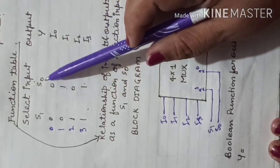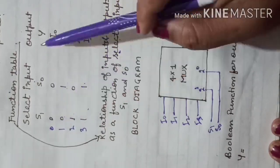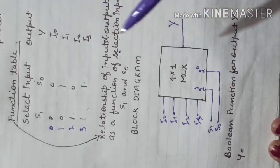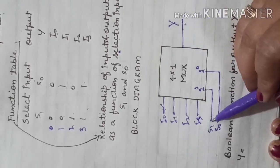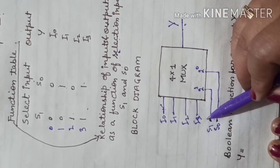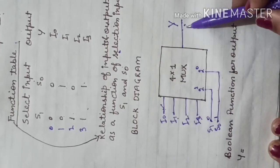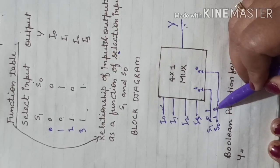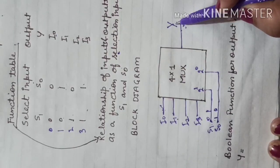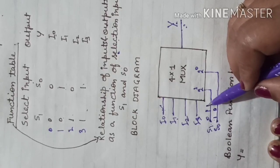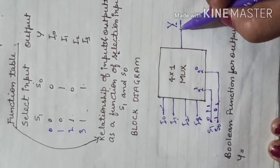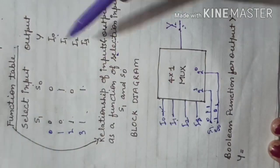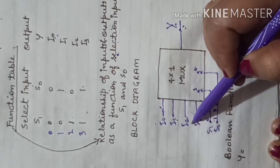Whenever the bit combination of S1 and S0 is 00, then I0 input is selected as output. When S1 S0 is 01, then I1 is selected as output. If S1 S0 is 10, the code is 2 and I2 is selected as output. And if the value of S1 and S0 is 11, then its corresponding decimal code is 3 and I3 is selected as output. Yani ki these selection inputs decide which input out of all inputs is selected as output.